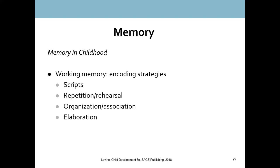The third thing that helps memory in childhood is developing encoding strategies. We start forming scripts — what information processing researchers call event schemas. Just as Piaget described a restaurant schema, a script is a learned sequence of what to expect in events. This frees up attention to learn and remember other things. We also learn repetition rehearsal — repeating information over and over in conscious working memory, like repeating a phone number to yourself to hold onto it.